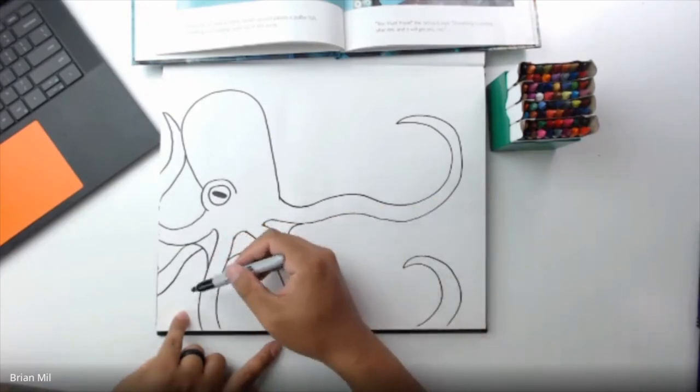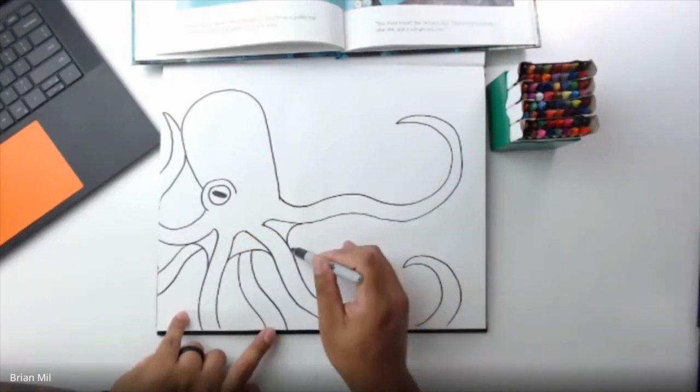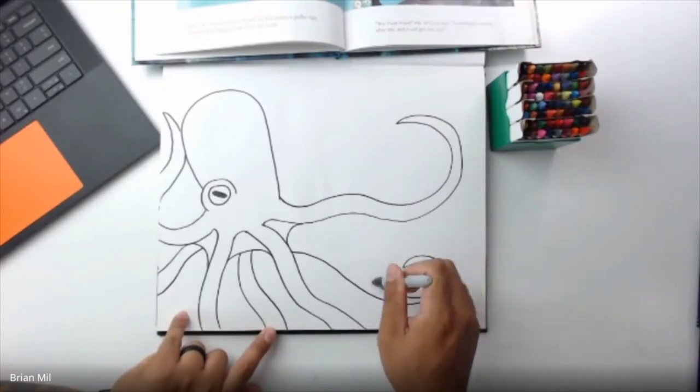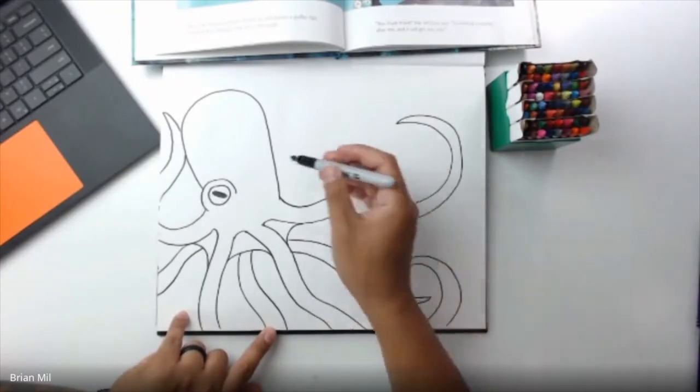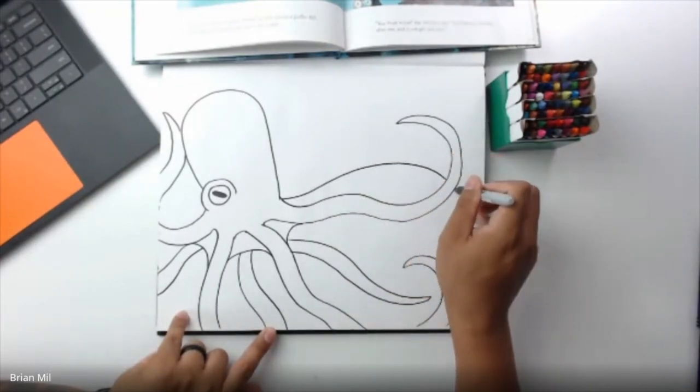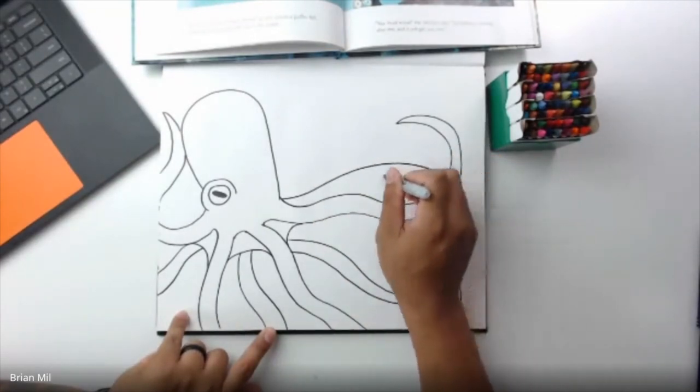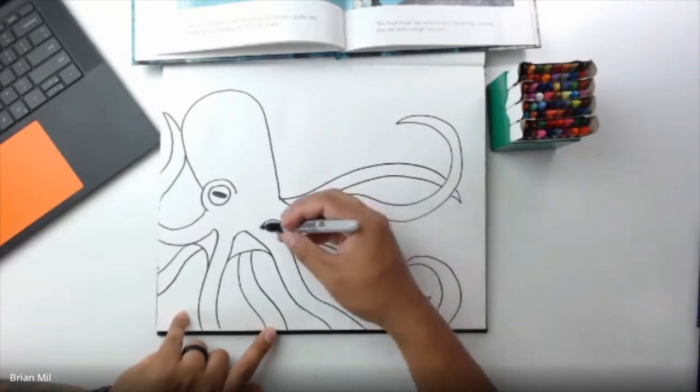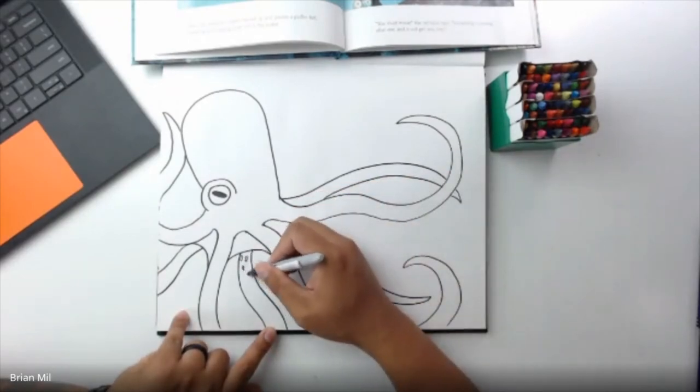So you can just kind of go like that, so it looks like it's going from behind. There we go. See, so now I have one, two, three, four, five, six. I just need two more. Let me put an eighth one somewhere. Maybe it's going behind here. Alright. So there we go. If you want to add some suction cups, you can. It's just tiny little ovals.